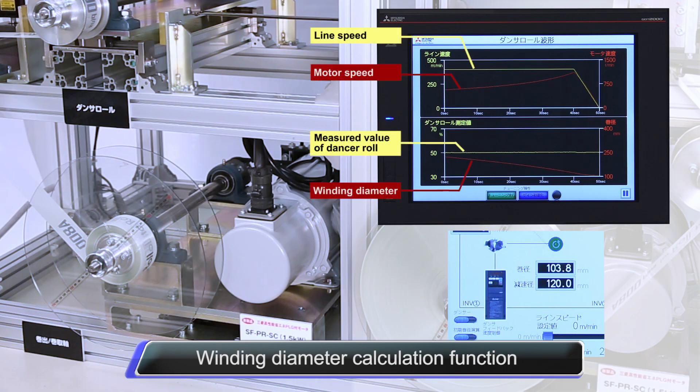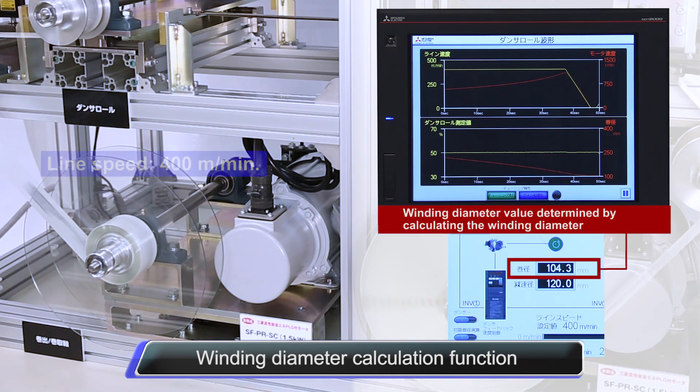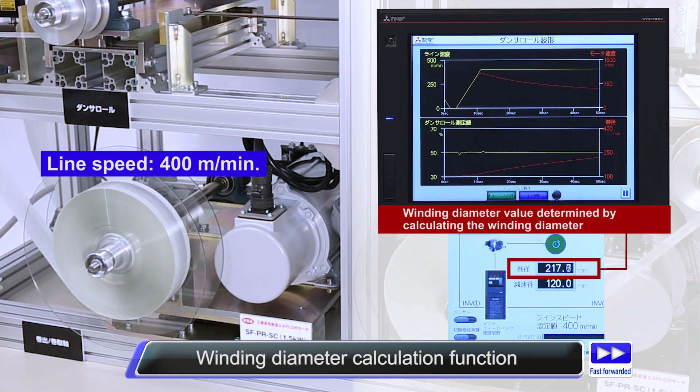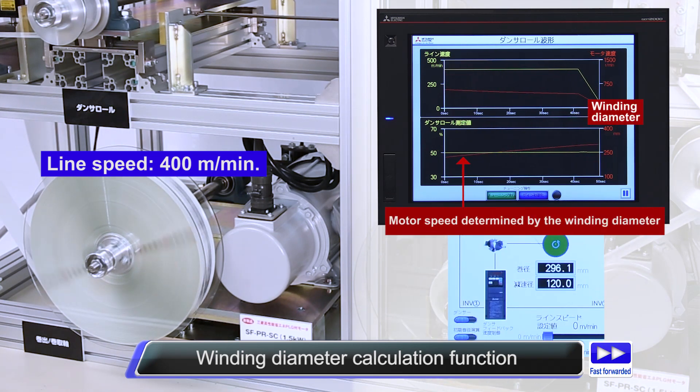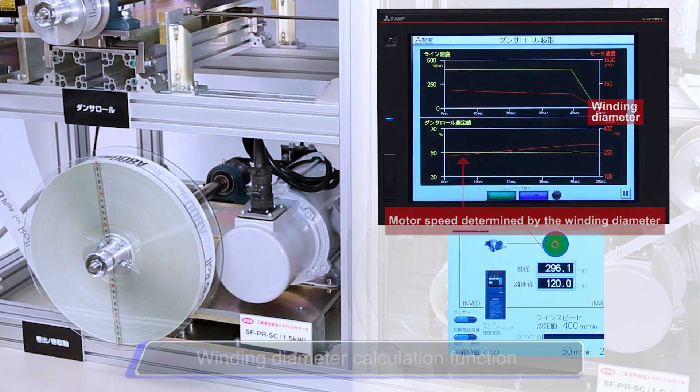By inputting the line speed into a standalone Mitsubishi Electric FRA800 Roll-to-Roll Inverter, it is possible to calculate winding diameters. Various types of adjustments are possible through processing the winding diameter calculations with the inverter.